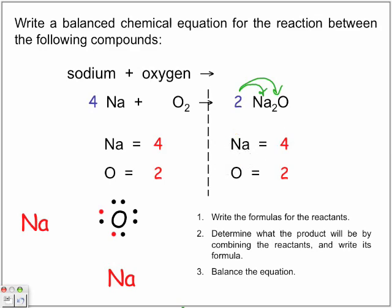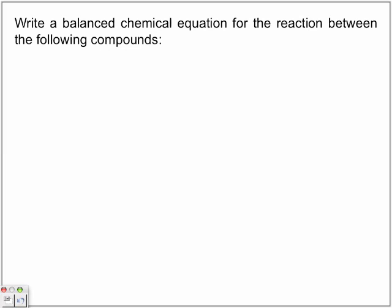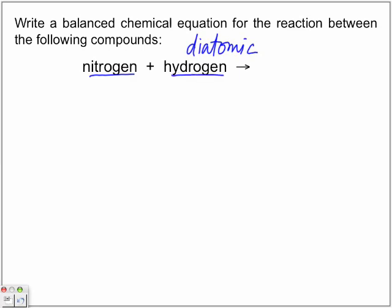Let's look at the next slide here. Write a balanced chemical equation for the reaction between the following compounds. Now we're going to be looking at two that we're going to consider as non-metals. So we have nitrogen and hydrogen, and remember, both of them are diatomic. So both nitrogen and hydrogen are diatomic, which means when we're writing out the formula, they're N2 plus H2.